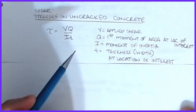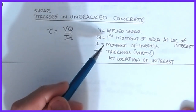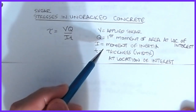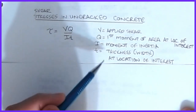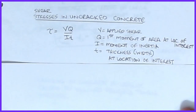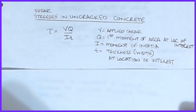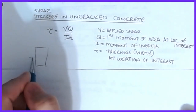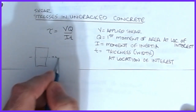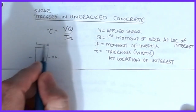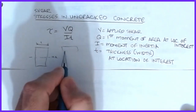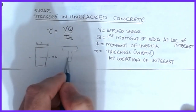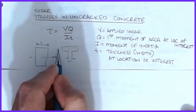V is the applied shear at the section, Q is the first moment of area — the computationally intensive part — I is the moment of inertia of the cross section, and t is the thickness or width at the location of interest. For a rectangular section, t is the full width at the neutral axis; for a T-beam, t depends on whether you want the shear stress in the flange or the web.